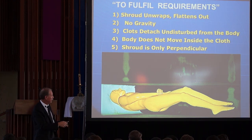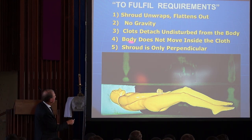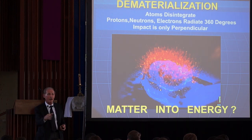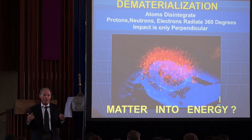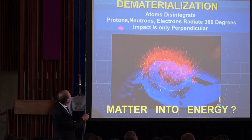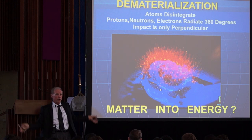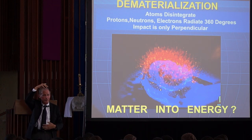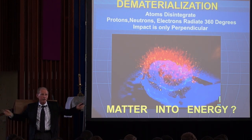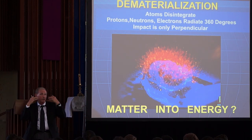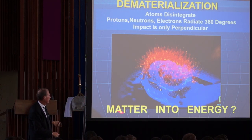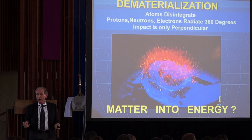Working backwards: no gravity, clots detach undisturbed from the body, the body does not move inside the cloth, the shroud is perpendicular. The atoms disintegrate into all the components of the atom — electrons, protons, and so on. It radiates 360 degrees in all directions. But where is the shroud? It's only at 180 degrees — on the bottom and on the top. All the radiation going sideways doesn't create an image, which is why there are no ears and no cheeks on the sides.